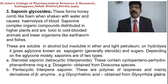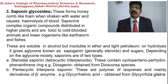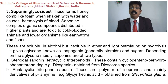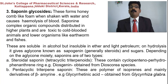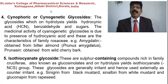Pentacyclic triterpene saponins are polymers of isoprene units — the basic unit for terpenes. Isoprene units have five carbon atoms, existing as dimethylallyl pyrophosphate or isopentenyl pyrophosphate. These two molecules combine via biosynthetic pathways to produce various secondary metabolites. Pentacyclic triterpene saponins are mainly derived from beta-amyrin. Example: glycyrrhizinic acid, obtained from Glycyrrhiza glabra.